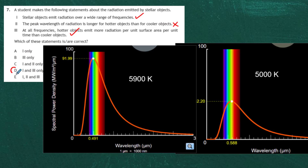We have two correct statements out of three: statements 1 and 3. Looking at the answer list, the answer is D — one and three only. It's well worth visiting the PhET site — I'll put a link in the notes below — and studying the black body radiation graphs. It's very important that you do so.